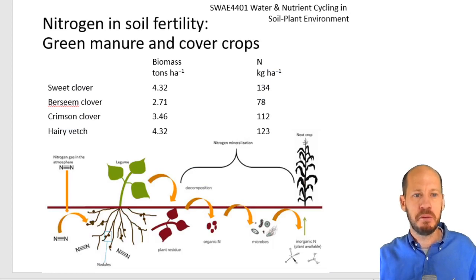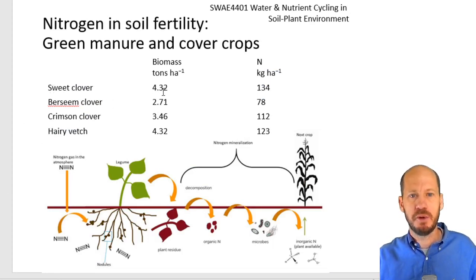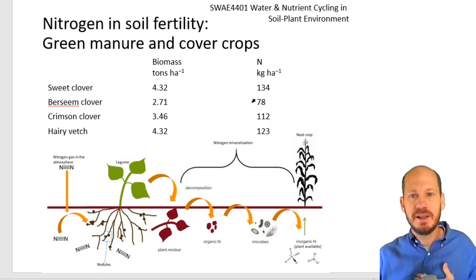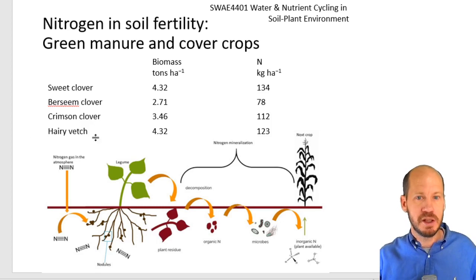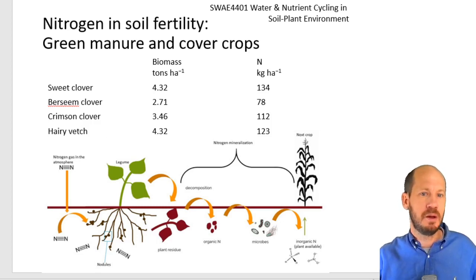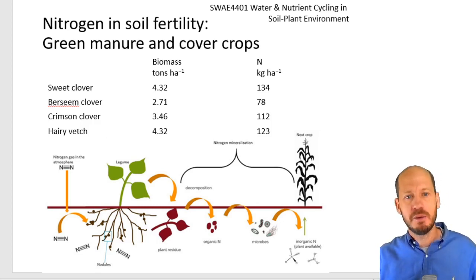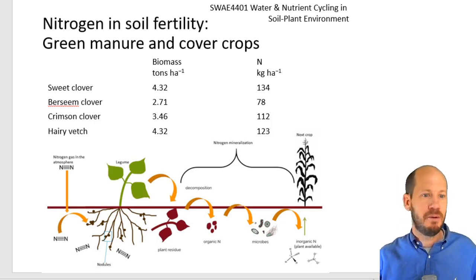How much nitrogen can come from green manures and cover crops? For example, sweet clover with a biomass productivity of 4.32 tons per hectare accounts for 134 kilograms of nitrogen per hectare. Some legumes can by themselves supply enough nitrogen for the next crop. With good management of green manures and cover crops, this is enough to supply the nitrogen for the next cycle. In organic farming, one of the best strategies is green manures and cover crops, and also intercropping with legumes, which can greatly increase nitrogen efficiency in the system.